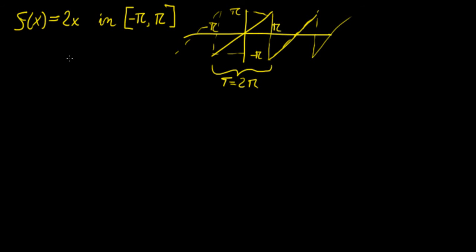We have already talked about how Fourier series can be used to approximate any periodic function that we define as continuous or piecewise within a specific interval, by simply taking an infinite sum of cosine and sine functions. In this video, what I'm going to do is extend that concept to finding the Fourier series expansion of a function that is not periodic.